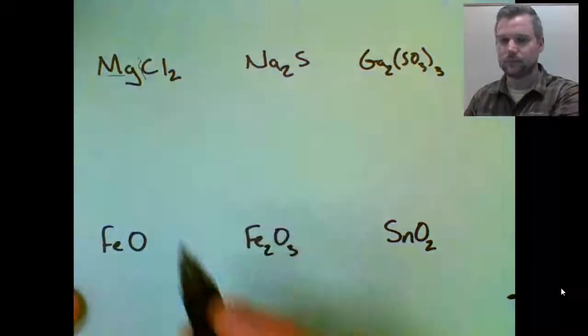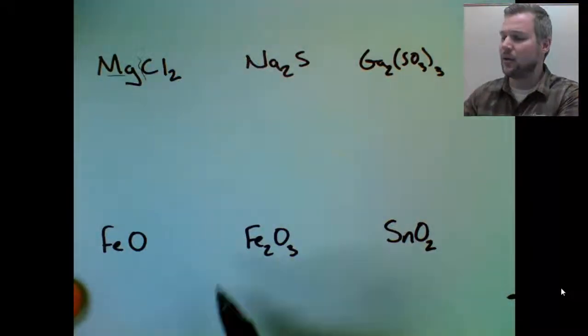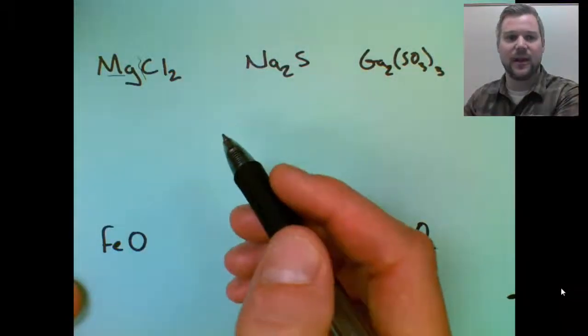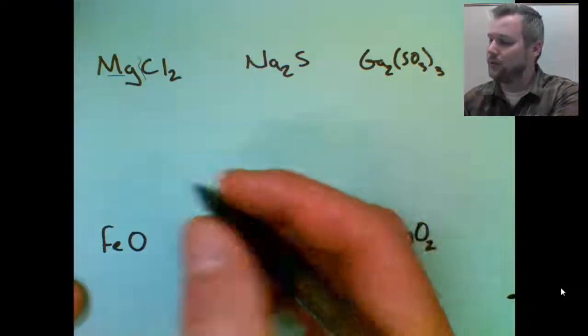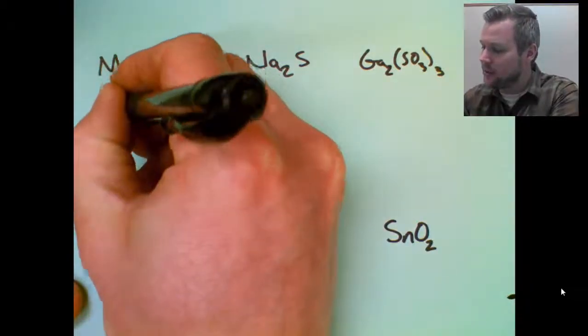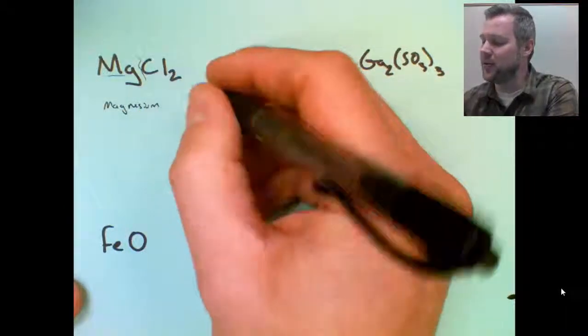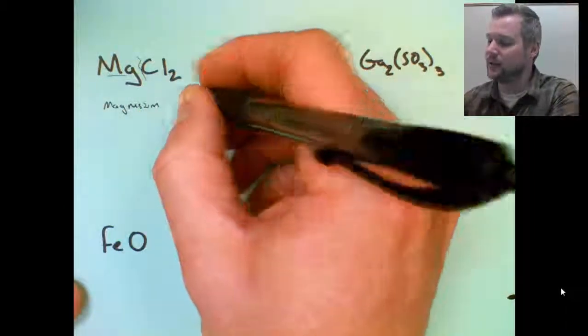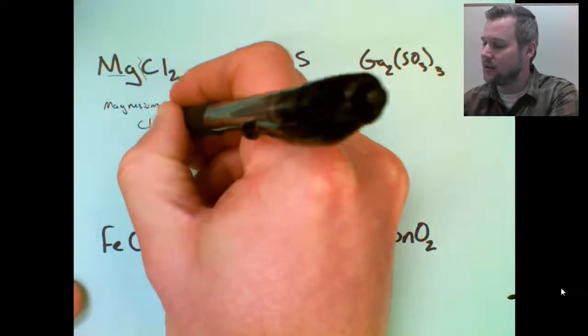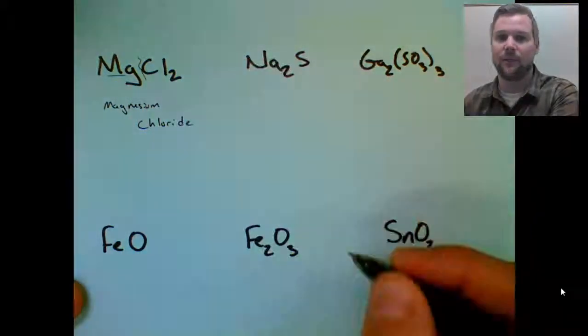I need to split my formula, call the first atom what it is. Since it's magnesium, magnesium doesn't need Roman numerals. So I have magnesium. Then since it's just a non-metal, I take the original name and add an IDE, so magnesium chloride would be its name.